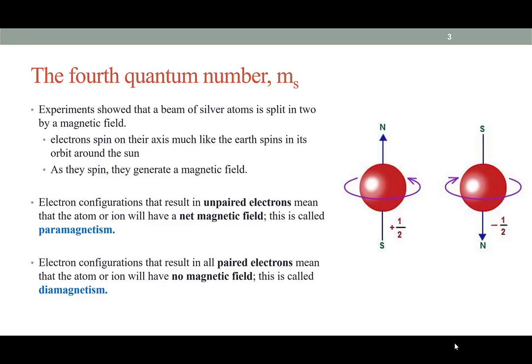There are two possible ways in which an electron can spin: to the right or to the left. Depending on the direction it spins, it will create either a positive or negative magnetic field. That's where we get our plus one-half and negative one-half quantum numbers.